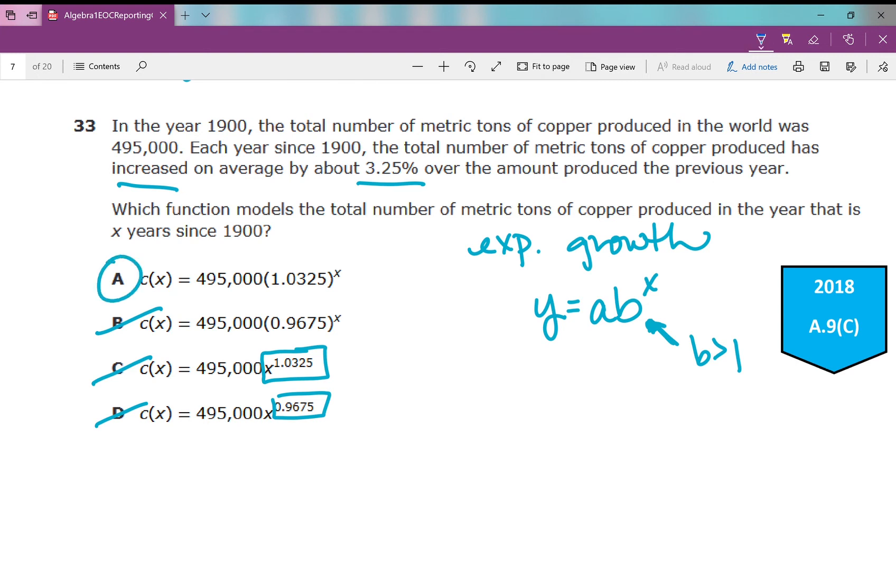And if I walk through this, if we start, the total number of metric tons of copper produced in the world was this amount. That's our initial amount, 495,000. If it increases 3.25%, what is 3.25% as a decimal? It's 0.0325. So my function would be y equals 495,000 times 1 plus 0.0325 raised to the power of x. And 1 plus 0.0325 is 1.0325.